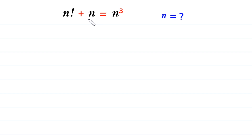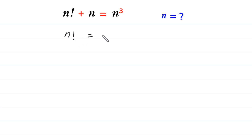First of all, we move this plus n to the right side. So n factorial is equal to n cubed minus n.